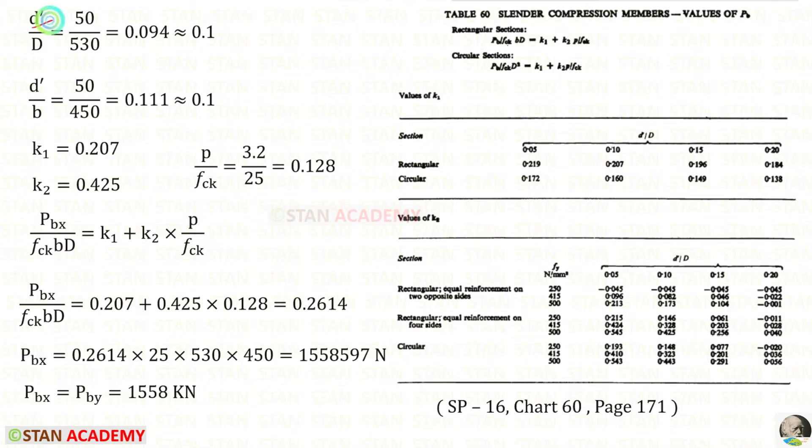Let us assume the effective depth D dash as 50. For D dash upon D, we will get 0.094. We can round that to 0.1. We have to take chart number 60 from SP16. Our section is rectangular. So, we have to copy this formula. We need to find K1 and K2. For rectangular section, when D dash upon D is 0.1, K1 is 0.207.